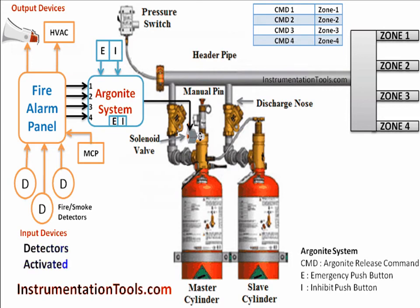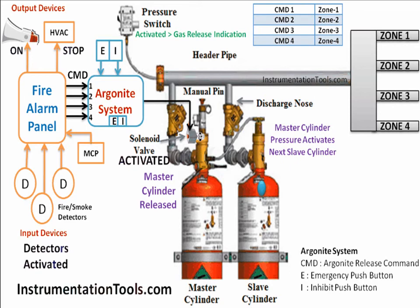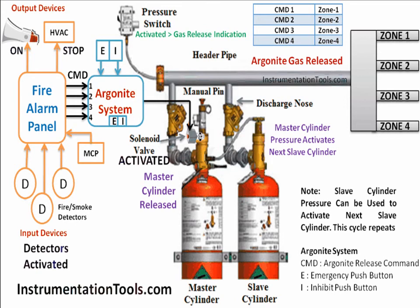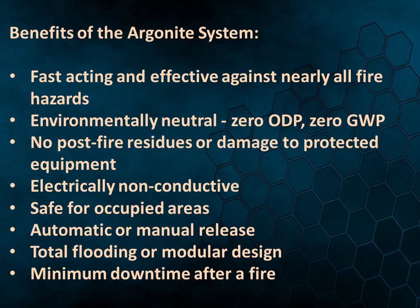A manual valve or release cutter pin is provided on all master cylinders. In case of automatic failure, we can use this manual valve to release the master cylinder, which then activates the remaining slave cylinders. Emergency push buttons are also installed near the Argonite System or respective zones, and are provided on the Argonite panel as shown in the animation. Pressure switches are installed in the main discharge line or specific zones, and Argonite gas release indication is taken from these pressure switches.